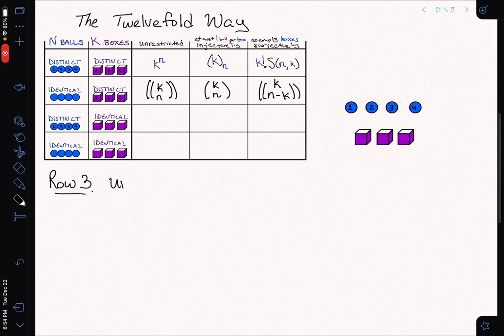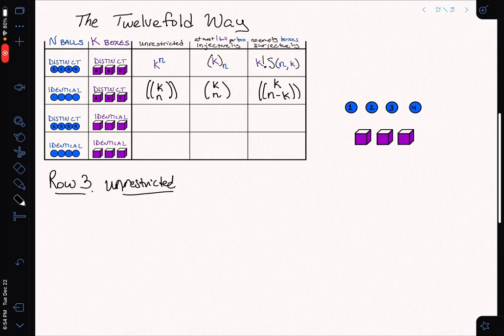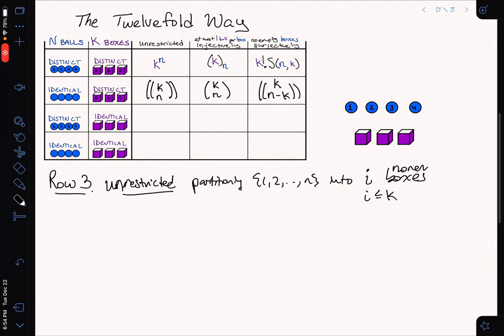So we're doing row three. Let's look at the unrestricted case. In the unrestricted case, all that I'm doing is I'm partitioning my balls, which are labeled one up to n, into i boxes where i is less than or equal to k. So the i boxes are the ones that are non-empty.